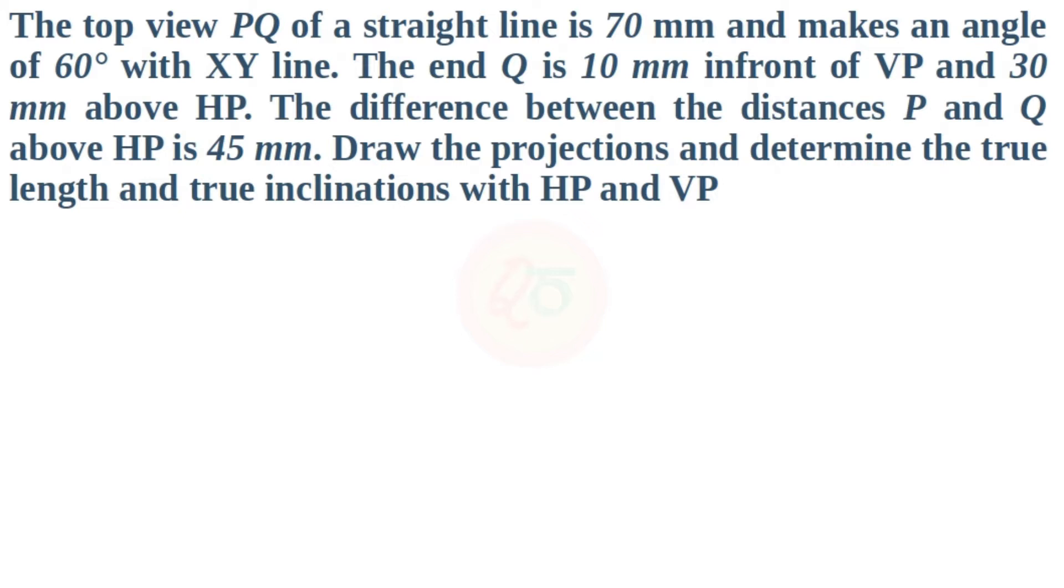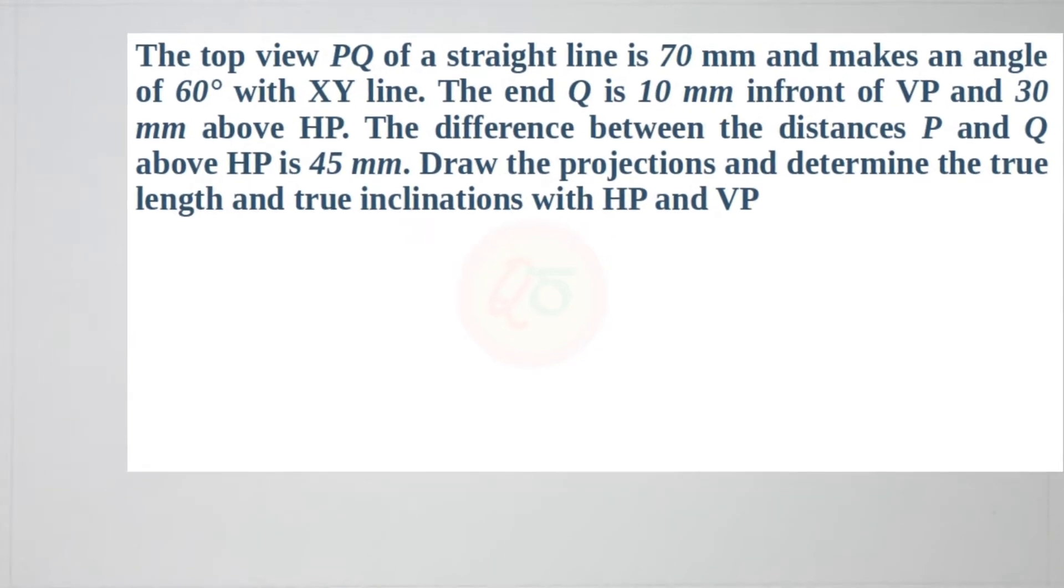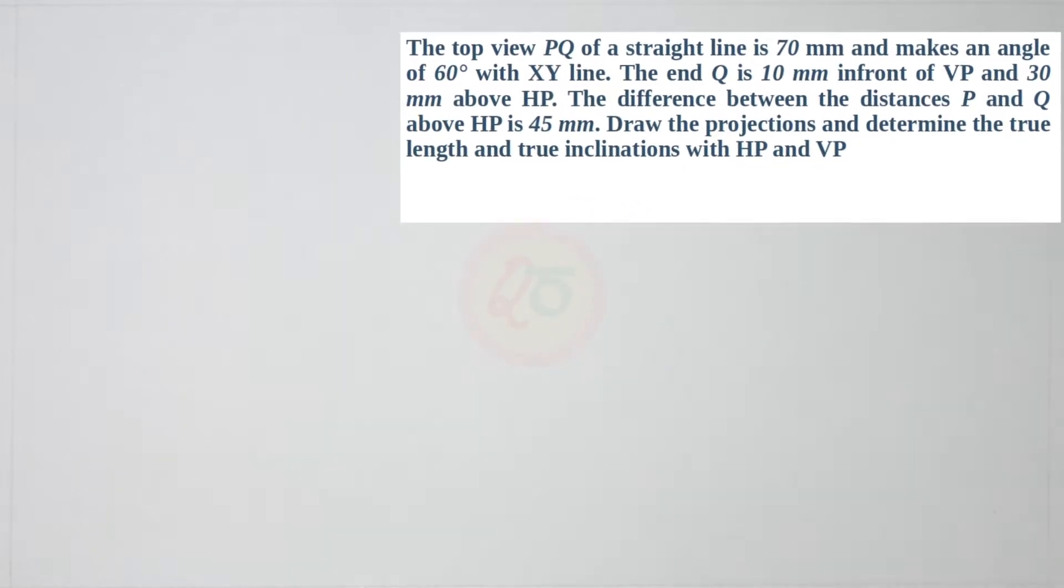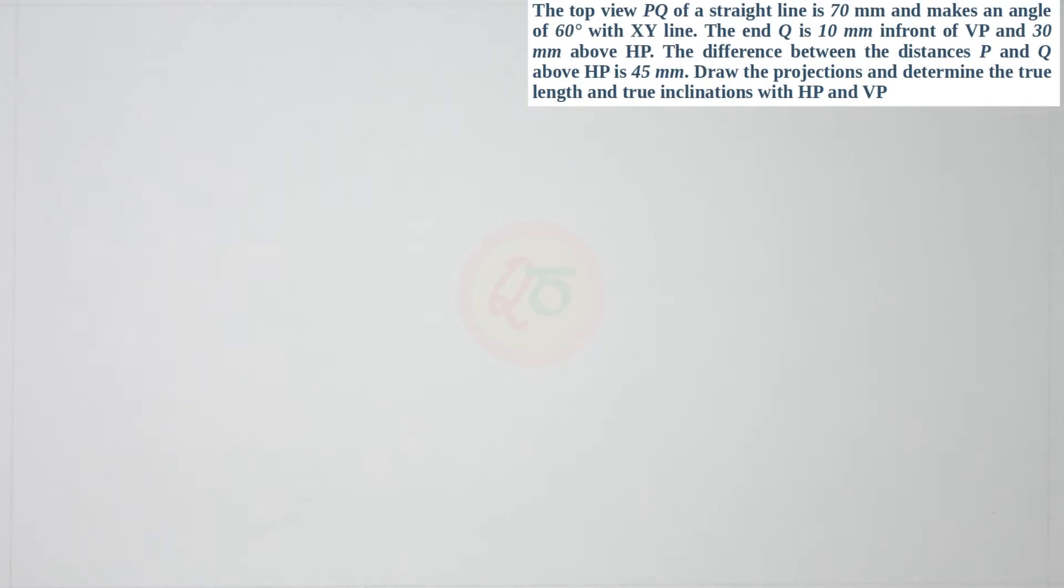If you observe, like the previous problem, we have the top view length of the straight line which is 70 mm. Instead of the front view length, we have the location of Q. Q will be the starting point for us in this problem. Unlike the previous problem, we used to take P or A as the starting. Since Q's dimension with respect to HP and VP is given, like 10 mm in front of VP and 30 mm above HP, we will start the line from Q. The length in the top view is known, and the angle in the top view is known. We will construct the top view first properly and then proceed to obtain the front view.